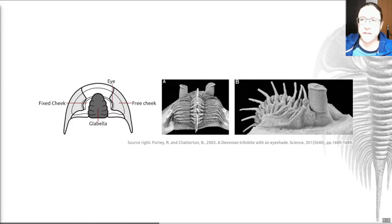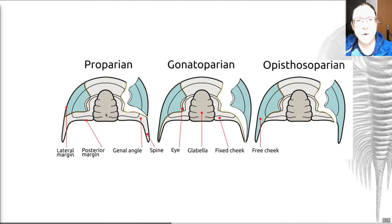The other thing to consider is that there is a facial or cephalic suture shown here in this dark black line and that separates the free cheek from the fixed cheek. These are lines on the cephalon along which the cephalon separates when the trilobite molts. The free cheek when molting occurs gets broken off the remainder of the cephalon, hence the name. Facial sutures are really important to the biology of the animal. They allow it to molt.